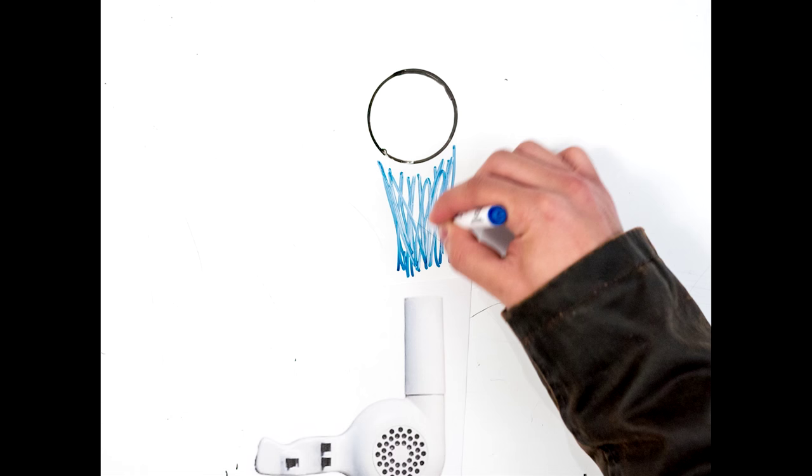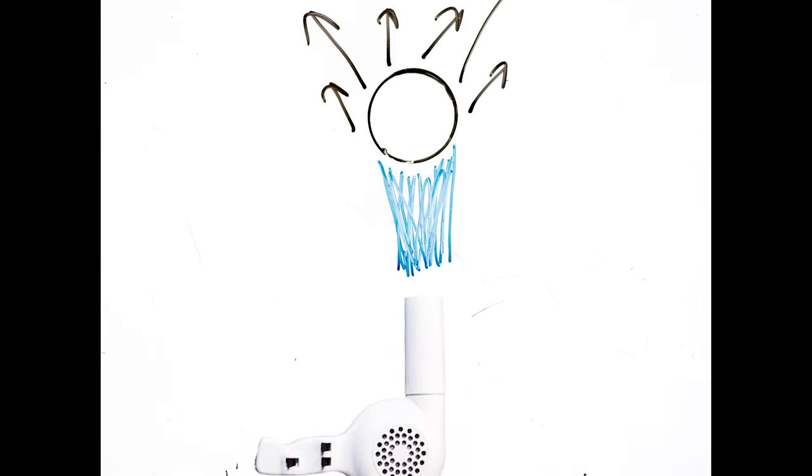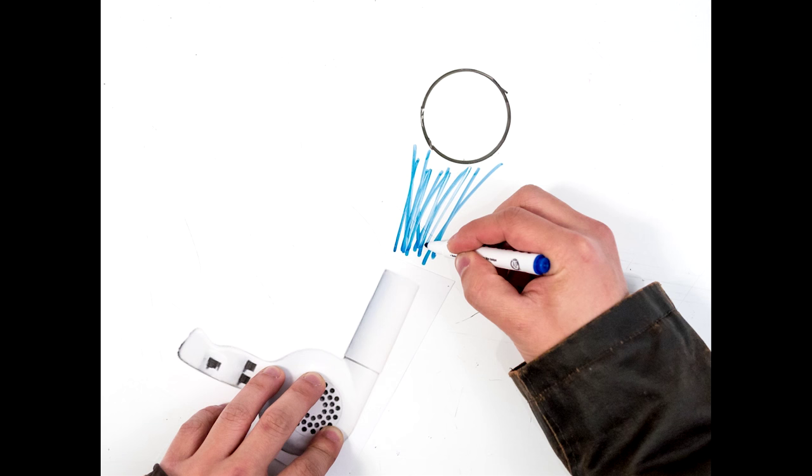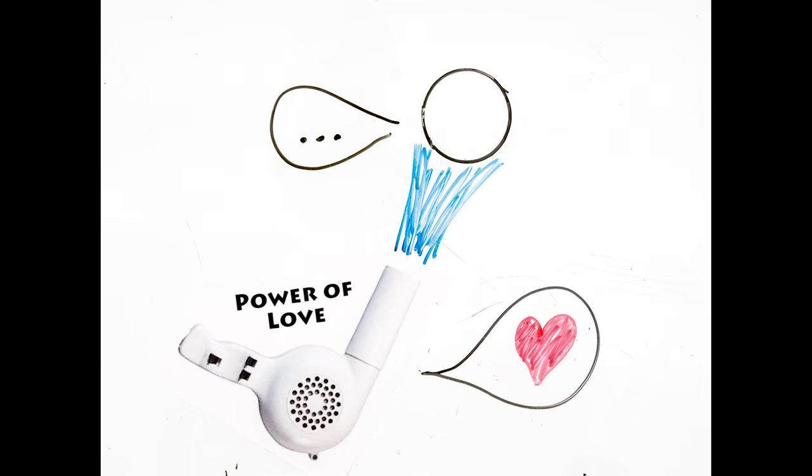A more popular example uses a hair dryer and a ping pong ball. If the ping pong ball is placed into the air stream of a hair dryer, what do you think would happen? Naturally, one would think the ball would shoot off but it doesn't. It actually levitates. But let's see what happens when we change the angle of the hair dryer. The effect continues and the ball stays trapped.